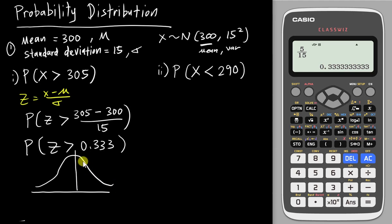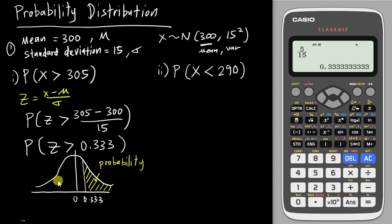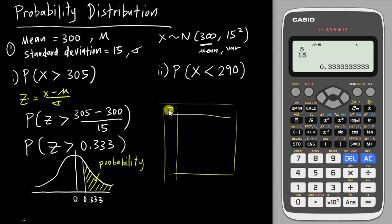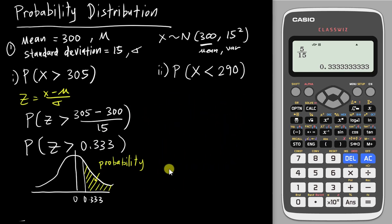You draw out a bell shape diagram where the middle is 0 and 0.333 is to the right. Because of the 'greater than' sign, the area you want to find is to the right of 0.333, and that shaded area is the probability. The total area of the bell shape is 1, so each half is 0.5. Normally in the exam you would use the Z value table to read off this probability.